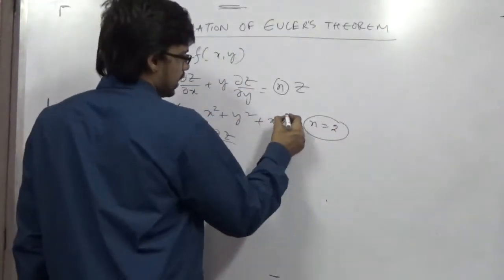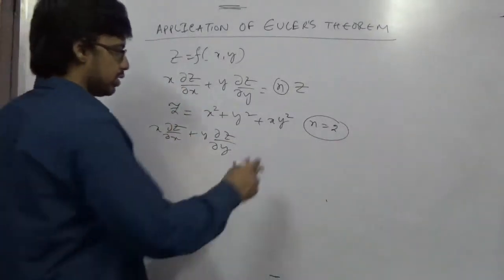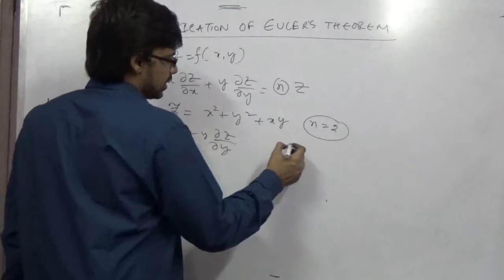But remember that if I put it like squared, then you cannot apply this formula of Euler's in this equation. So it is only applicable for homogeneous functions.